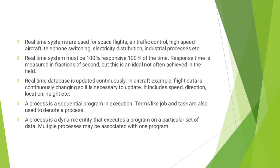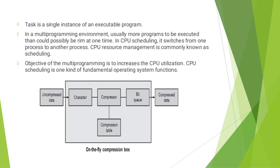A process is a sequential program in execution. Terms like job and task are also used to denote a process. A process is a dynamic entity that executes a program on a particular set of data. Multiple processes may be associated with one program.